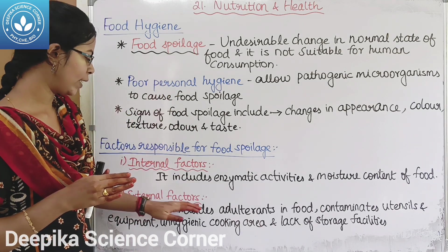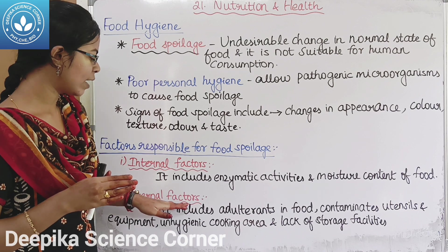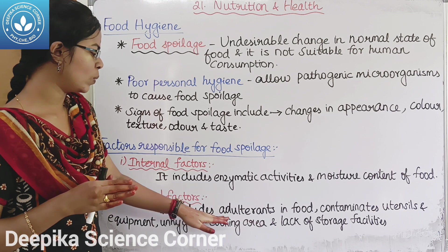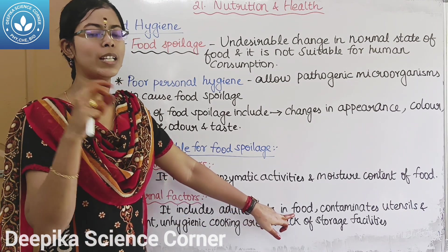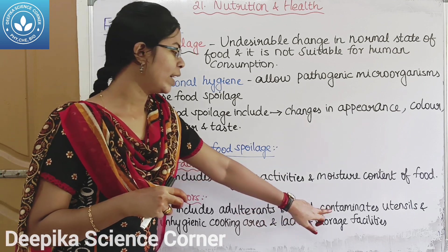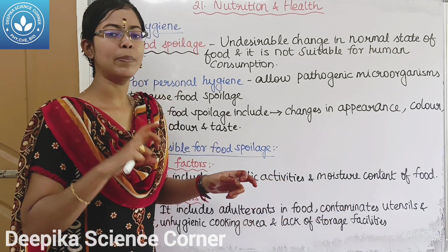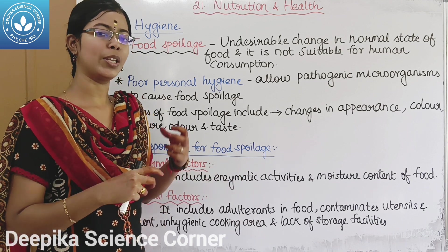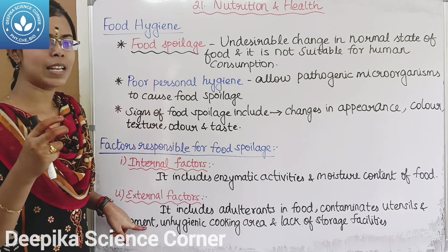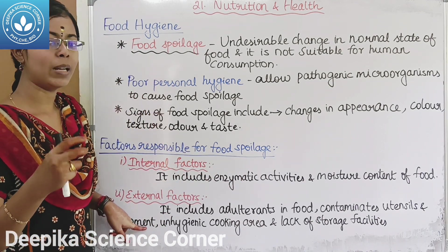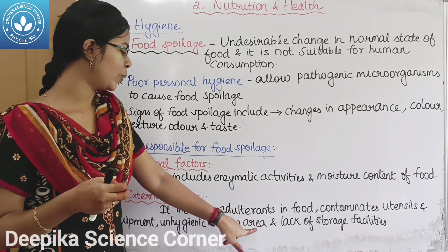Here are the external factors. External factors include adulteration in food — adding unwanted substances to food — which contaminates the utensils. Using contaminated equipment and an unhygienic cooking area are also external factors.